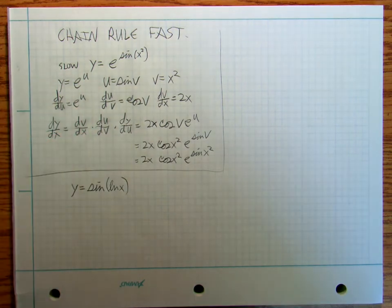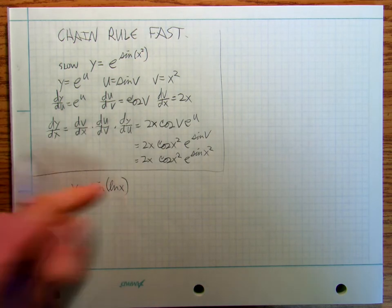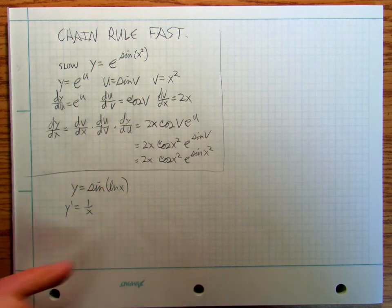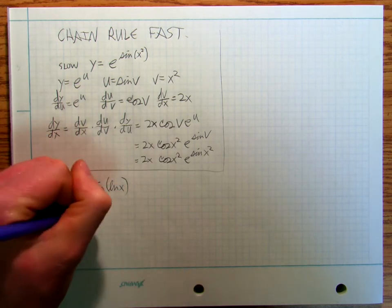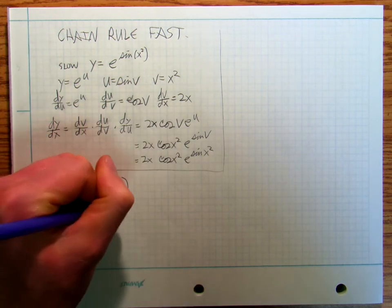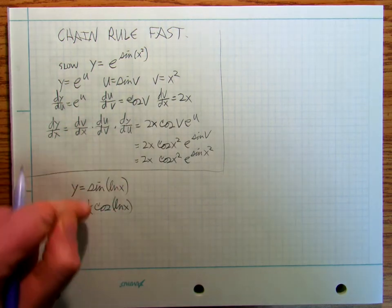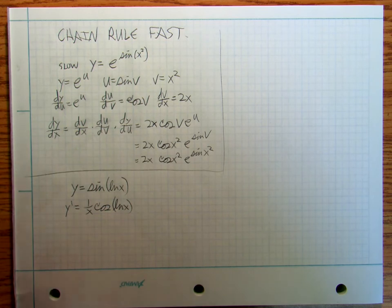Okay, well, all I got to do is I got to take the derivative of the inside, which is 1 over x, times the derivative of the outside, which is cosine ln x. Derivative of the inside times derivative of the outside. Bam.